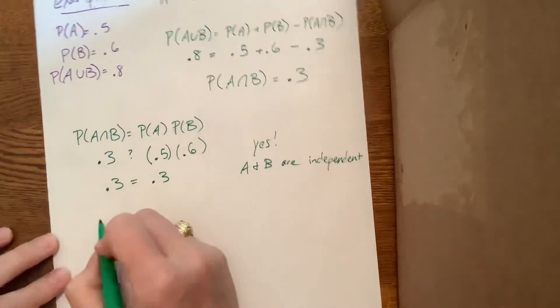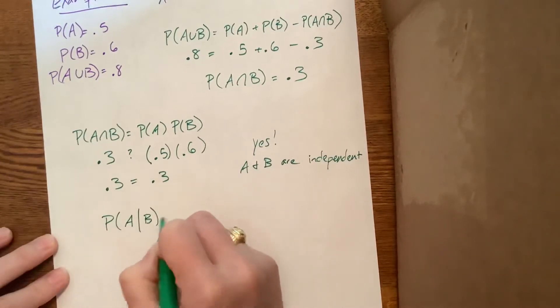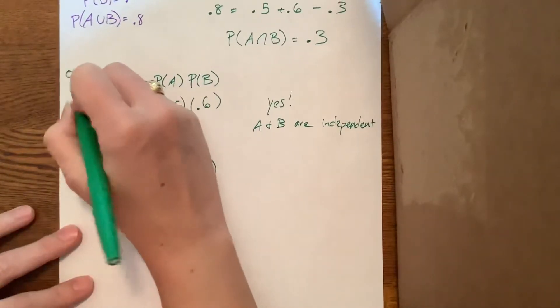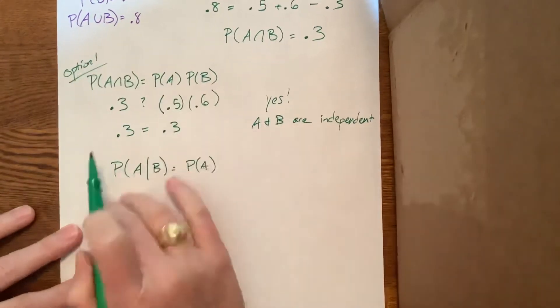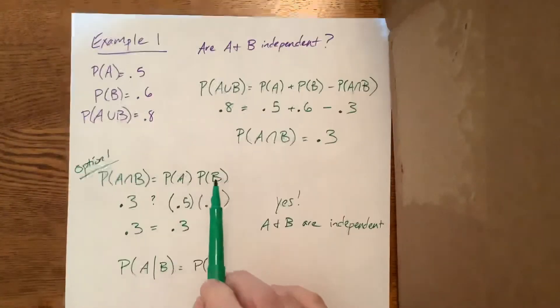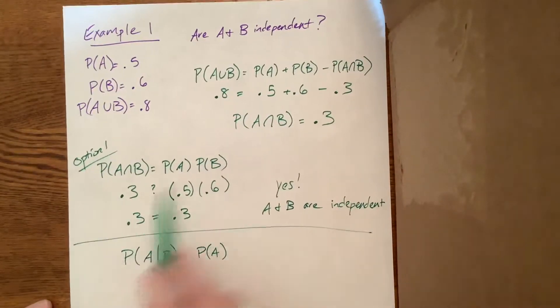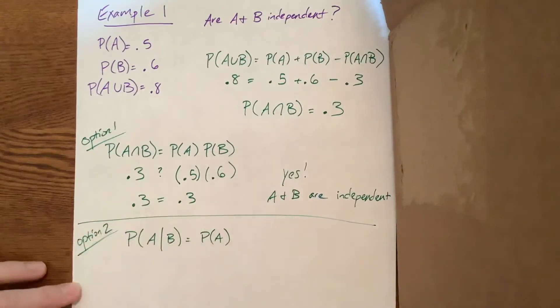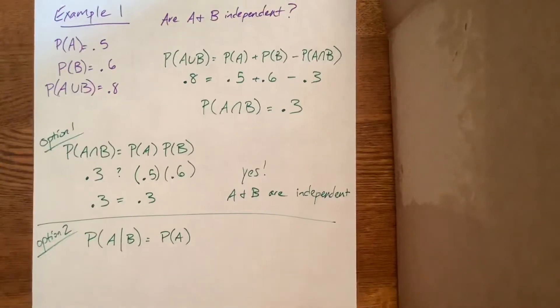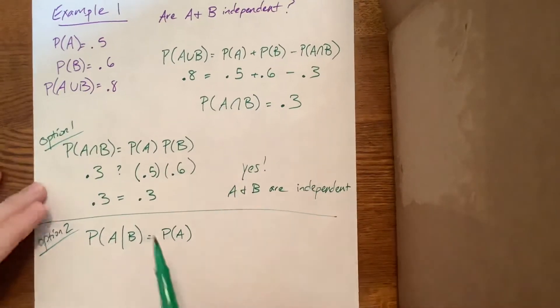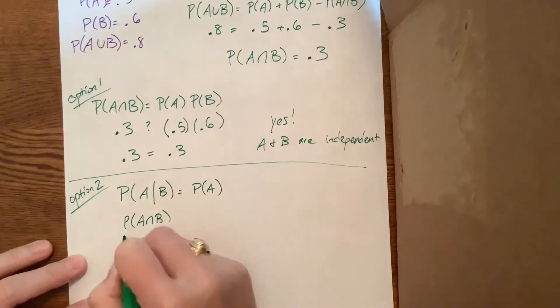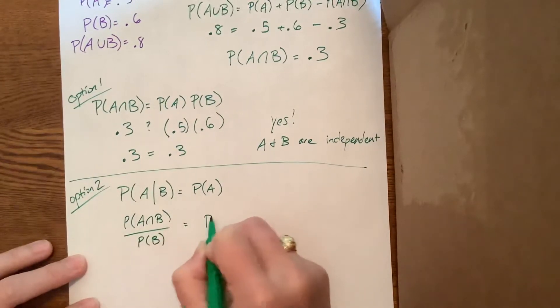Let's try the other one just in case. If we wanted to use this one, we need to show that the probability of A given B is equal to the probability of A. If this is true, then it's also independent. At this point, if they say show whether they're independent or determine and justify mathematically, this is sufficient. You're done. But you could also do it a different way. You're not required to do both, but you've got choices. We remember the probability of A given B is equal to the probability of A intersect B divided by the probability of B. And we're trying to see, is that equal to the probability of A?